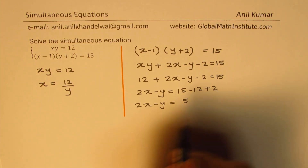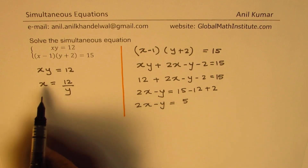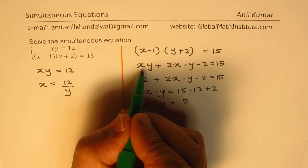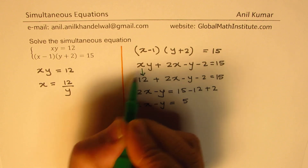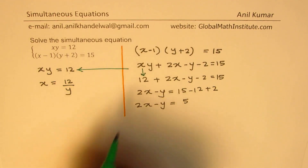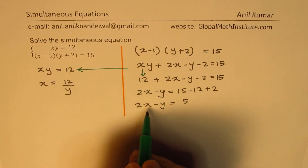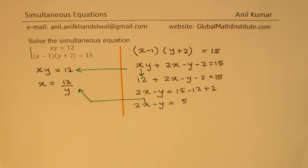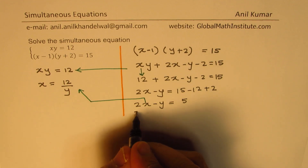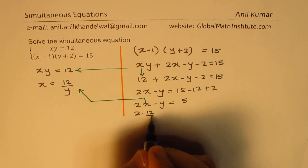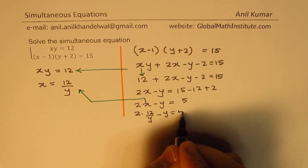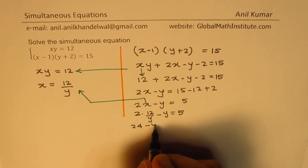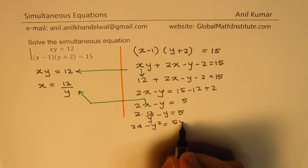15 minus 2 is 3, 3 plus 2 is 5. At this stage, we can substitute x equals to 12 over y. So now we'll make this substitution: 2 times 12 over y minus y equals to 5. Multiplying by y, we get our quadratic equation, which is 24 minus y squared equals to 5y.